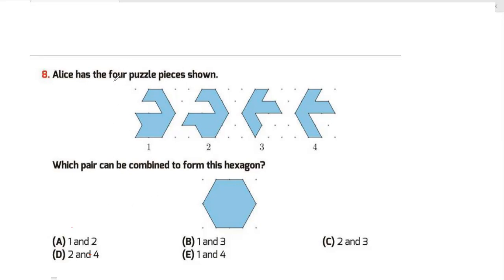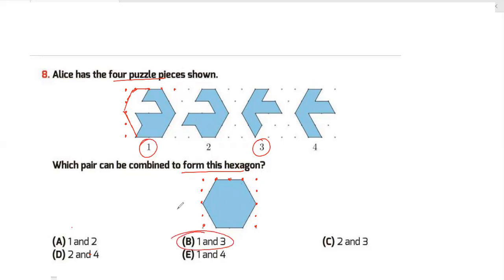Question 8: Alice has four puzzle pieces. Which pair can be combined to form the given hexagon? Analyzing the hexagon's shape — it has five sides on each half. Looking at the pieces, pieces 1 and 3 together form the hexagon shape correctly. My answer is option B, pieces 1 and 3.